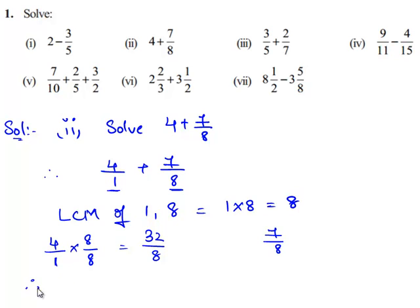The expression 4 plus 7 by 8 is written as 32 by 8 plus 7 by 8. Since both fractions have common denominators, we can directly add the numerators.